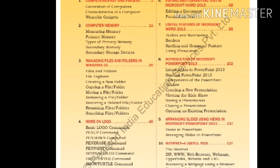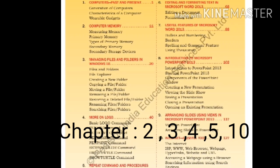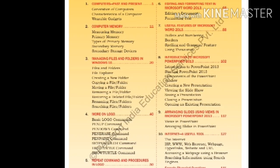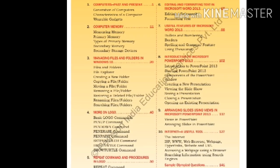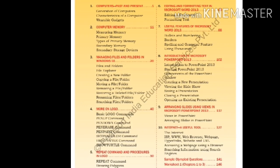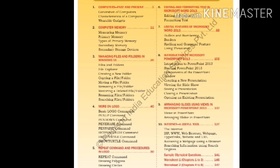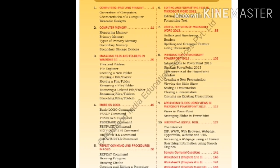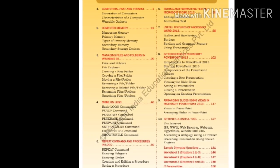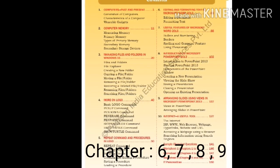So for the half yearly examination, the chapters are 2, 3, 4, 5, and 10. Next is the annual examination. Chapter 6: Editing and Formatting Text in Microsoft Word 2013. Chapter 7: Useful Features of Microsoft Word 2013. Chapter 8: Introduction to Microsoft PowerPoint 2013. Chapter 9: Arranging Slides Using Views in Microsoft PowerPoint 2013. These are the chapters for annual examination — that is chapters 6, 7, 8, and 9.